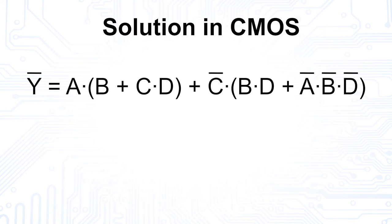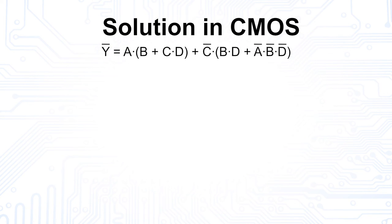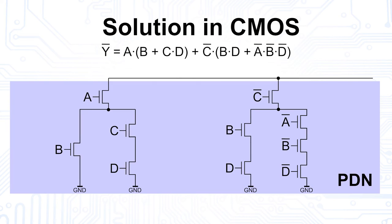Now that we have our minimized Boolean equation, it's time to draw the circuit. Since we have searched for all low states at the output and set up the equation for y dash, we start again with the pull-down network. Again, each AND connection corresponds to a series connection of NMOS and each OR connection corresponds to a parallel connection.